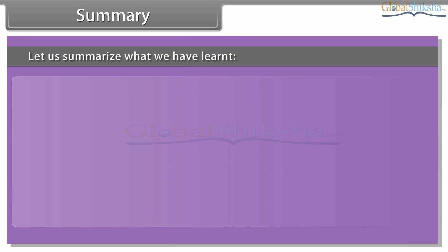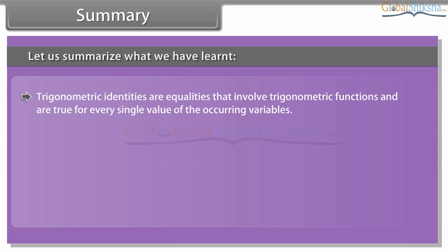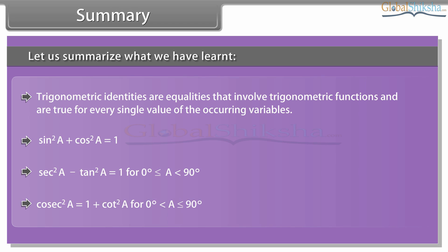Summary: Let us summarize what we have learned. Trigonometric identities are equalities that involve trigonometric functions and are true for every single value of the occurring variables. Sin square a plus cos square a is equal to 1. Sec square a minus tan square a is equal to 1, for 0 degree less than or equal to a which is less than 90 degree. Cosec square a is equal to 1 plus cot square a, for 0 degree less than a which is less than or equal to 90 degree.